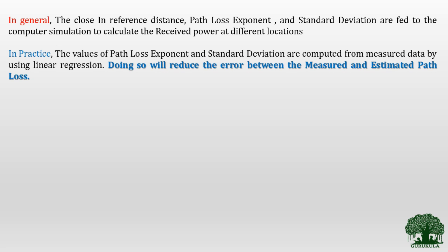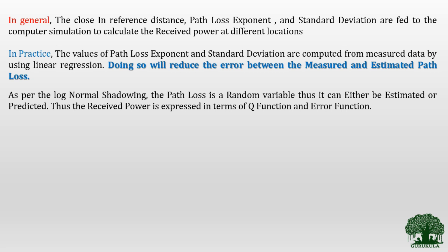In practical situations, to reduce error, the path loss exponent and standard deviation are actually measured in the real-time environment, and those measured data are given to the system using linear regression. By doing this, the error between the measured value and the estimated path loss is reduced. As per the log normal shadowing model, the path loss variable is now a random variable — not a constant — because of the addition of the Xσ value.